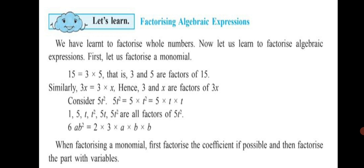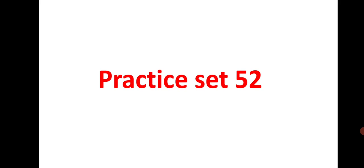In this practice set, we are going to learn how to factorize a monomial, which is an algebraic expression. When factorizing a monomial, first factorize the coefficient if possible, then factorize the part with variables. For example in 6ab², the number 6 is the coefficient and ab² contains the variables. Factors of 6 are 2 × 3, and ab² is written as a × b × b. Based on this pattern we will solve Practice Set 52.